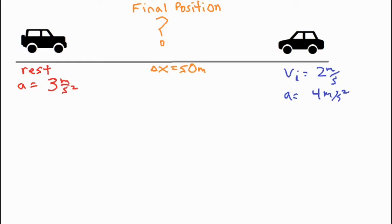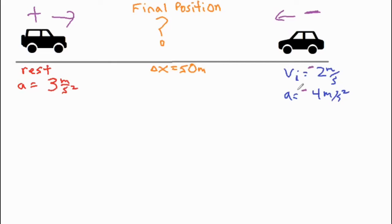The first thing you want to do is draw out a nice diagram so you can see which one is going which way. We're going to call this car going in the positive direction and this one going in the negative direction. That's going to be a subtle change in your numbers which will make a big change in finding the correct solution. I'm going to put a negative next to this velocity to indicate it's going to the left, and a negative with acceleration to show this one is speeding up in the negative direction.